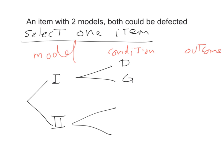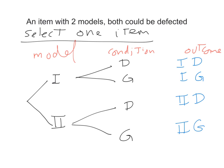If it's model one, the condition could be defective — meaning not working properly — or good, meaning working properly. The same applies to model two. So at the end you have: model one defective, model one good, model two defective, or model two good. The two-way classification here is model and condition. We are selecting only one item and classifying it two different ways.